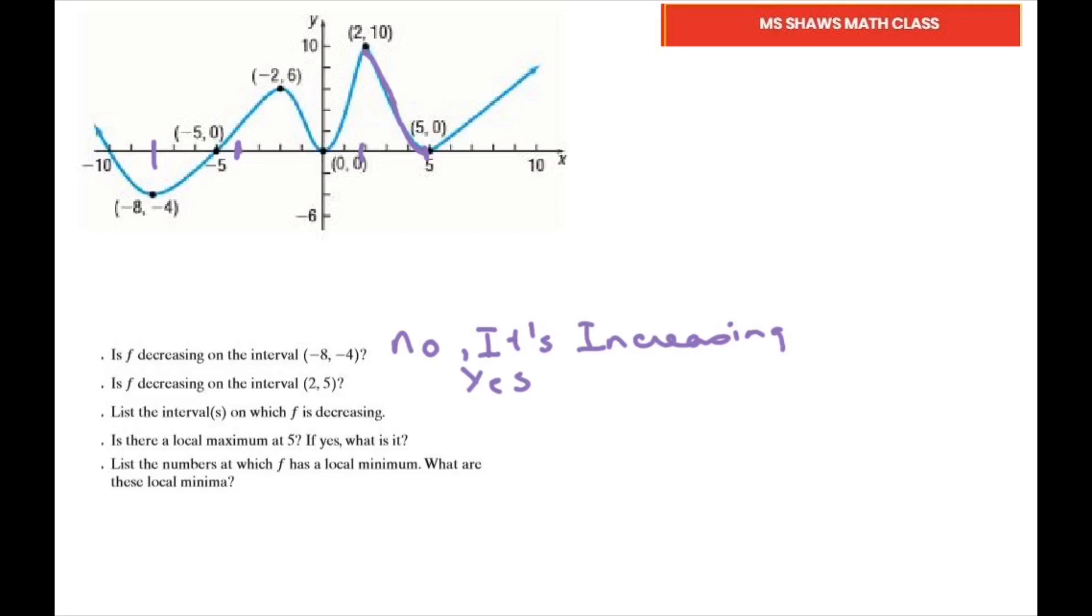List the intervals on which F is decreasing. Let's look at where it's decreasing, from left to right. It's decreasing from negative infinity to -8. It's decreasing from -2 to 0. And it's also decreasing from 2 to 5.